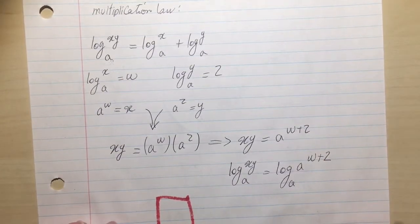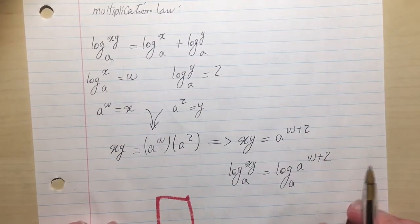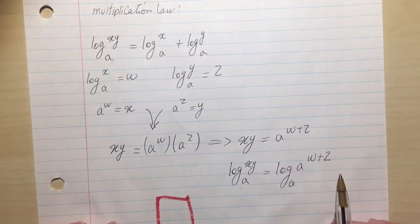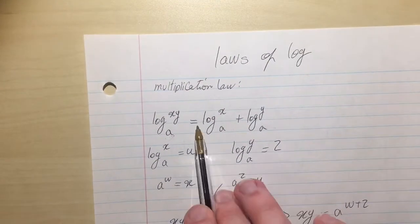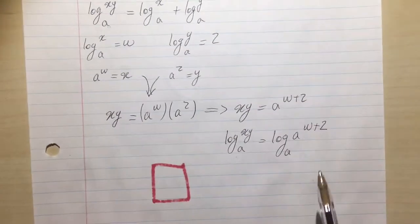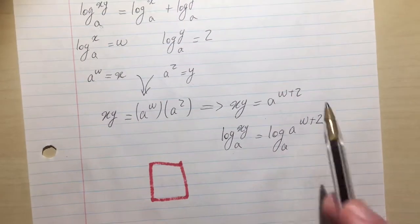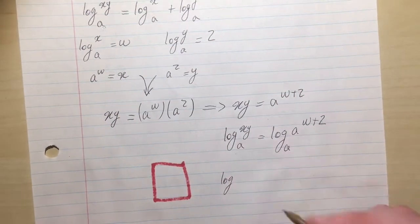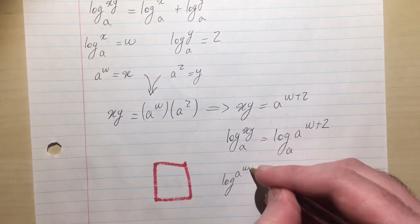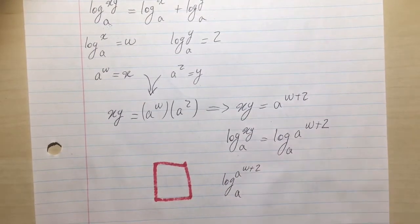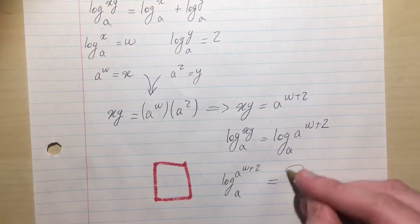So you have one side of the equation and you have the other side. You want something that looks like this. So we are going to evaluate this. Log A to the w plus z base A is something.